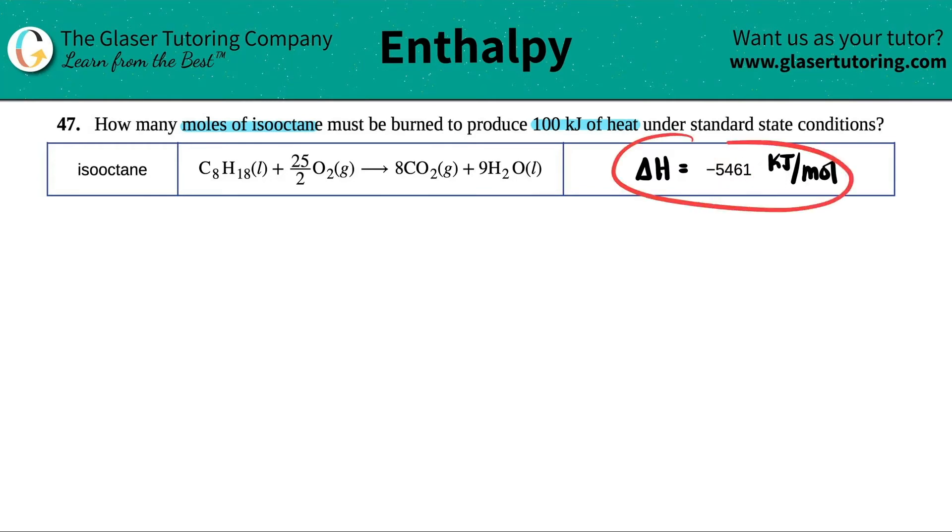Now, if I wrote this out in terms of an equal sign instead of a ratio, I would say that for every one mole of isooctane, which is C8H18,